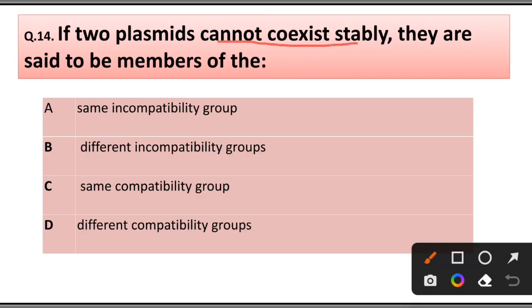Question 14: If two plasmids cannot coexist stably, they are said to be members of the: A) Same incompatibility group, B) Different incompatibility group, C) Same compatibility group, D) Different compatibility group.